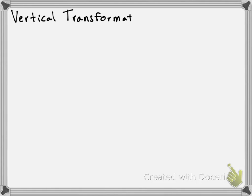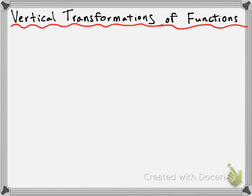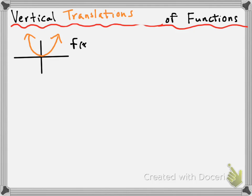Hey, everyone. In this video, I want to talk about vertical translations of functions. So last year, you would have talked about translations of parabolas. Let's start with parabolas. This is a very basic parabola, f of x is equal to x squared. We actually call this the parent parabola, because all other parabolas can be gotten by making changes to this parabola.